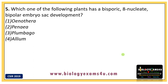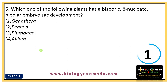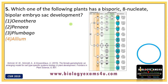Question five: Which one of the following plants has bisporic, eight-nucleate, bipolar embryo sac development? Options are: one, Oenothera; two, Pinia; three, Plumbago; and four, Allium. The answer is Allium.